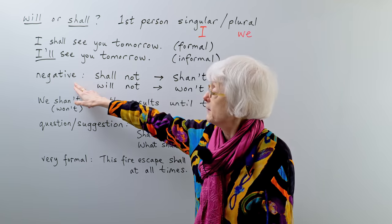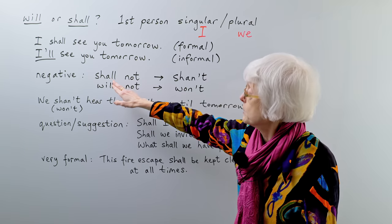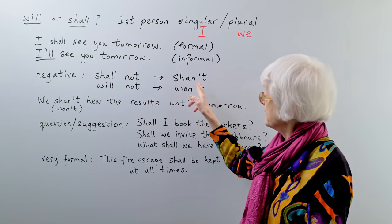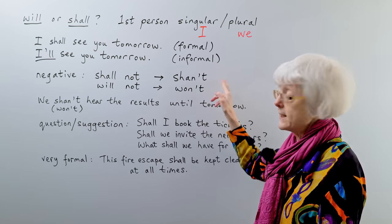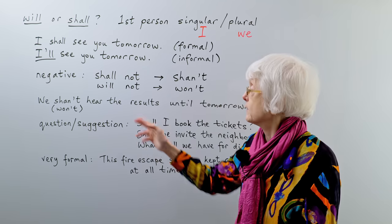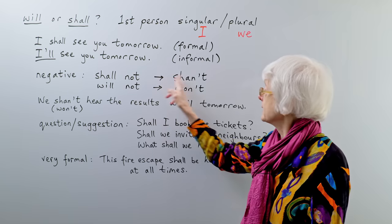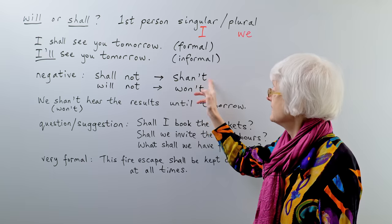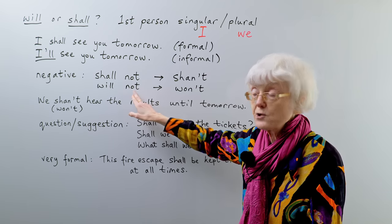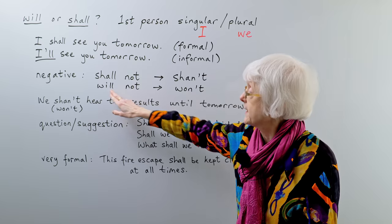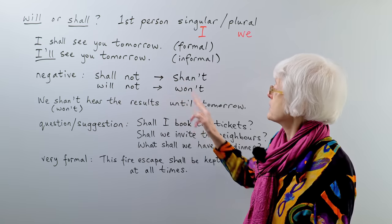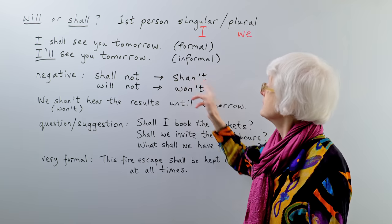But then if you are using it, you need to know how to form the negative. So, shall not and just like will not, but then the abbreviated form is shan't. So, it's a longer ah sound. Ah in shall becomes ah in shan't. And of course, will not, it's even stranger. It becomes won't. So, the I changes to an O. Will not, shall not. Won't. Shan't.